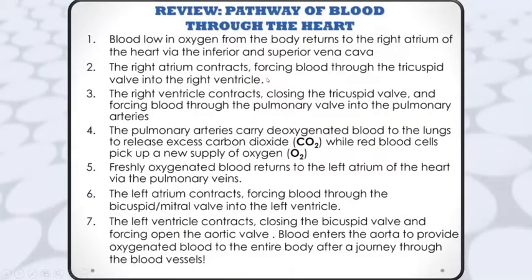This is a review showing the pathway of blood through the heart. Deoxygenated blood from the body returns to the right atrium through the inferior and superior vena cava. The right atrium contracts, forcing blood through the tricuspid valve into the right ventricle. The right ventricle contracts, closing the tricuspid valve and forcing blood through the pulmonary valve into the pulmonary arteries.